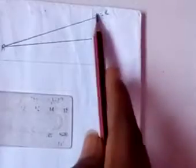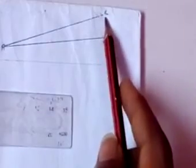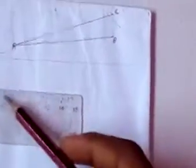Open your compass to the given true length and cut line AB at point C. So this is A, this is B, and this is C. AB is the elevation, and AC is the true length.